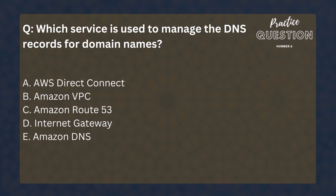Which service is used to manage the DNS records for domain names? Options: AWS Direct Connect, Amazon VPC, Amazon Route 53, Internet Gateway, Amazon DNS. This is the typical usage for Amazon Route 53, as we have explained that back in Section 4.